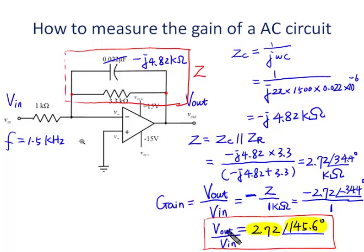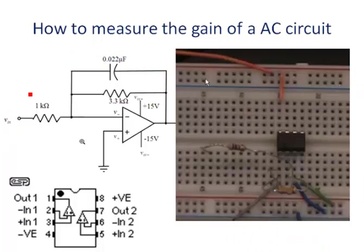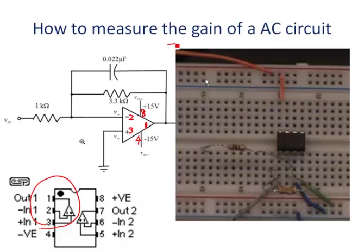We can measure the gain of the circuit by measuring the ratio of the voltages and the output voltage phase angle with respect to the input voltage. The input signal should be sent to the 1 kΩ resistor. There is only one op-amp in the circuit, so we use the first op-amp in the TL072 chip — pins 1, 2, and 3. The TL072 must be powered with positive 15 V and negative 15 V power supplies. Pin 8 connects to positive 15 V, pin 4 to negative 15 V, and the common ground is connected to pin 3 via the blue wire.